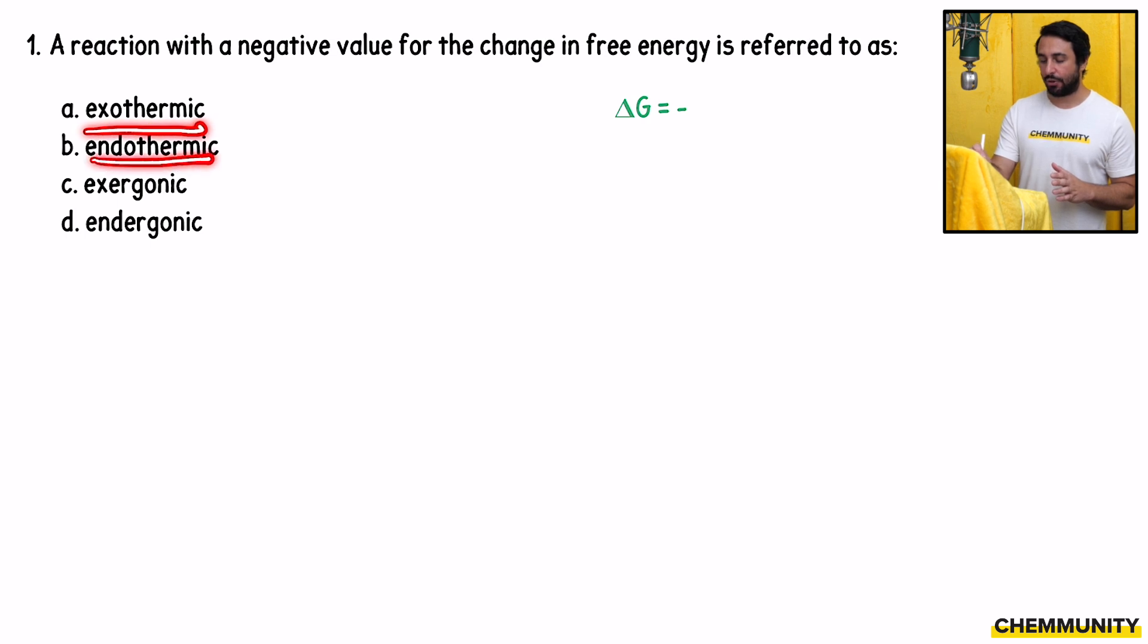Exothermic and endothermic relate to enthalpy. Exothermic means delta H is negative and endothermic means delta H is positive. So those are not the ones that we're looking for.